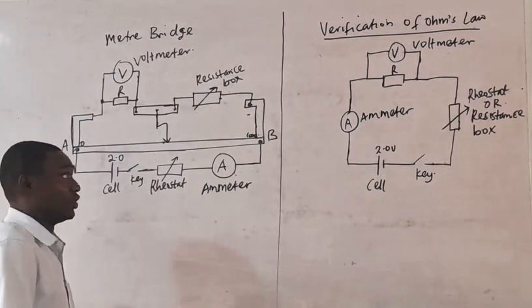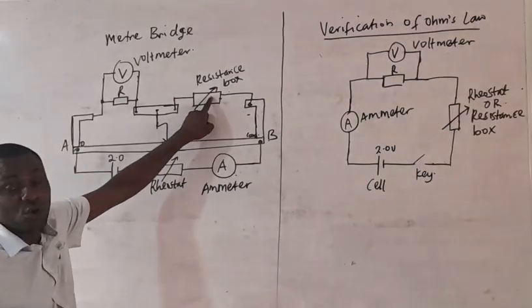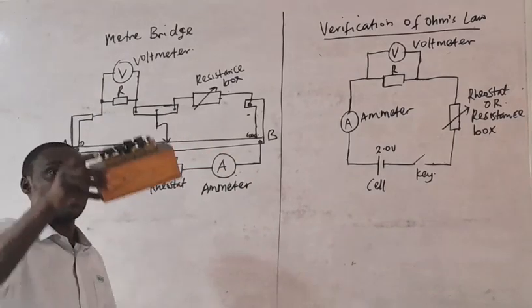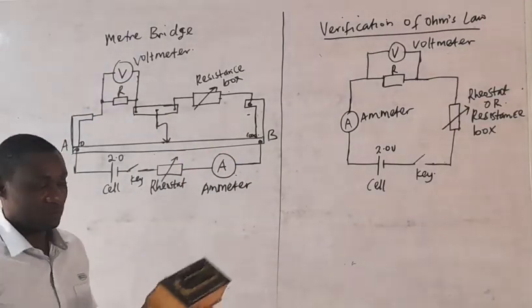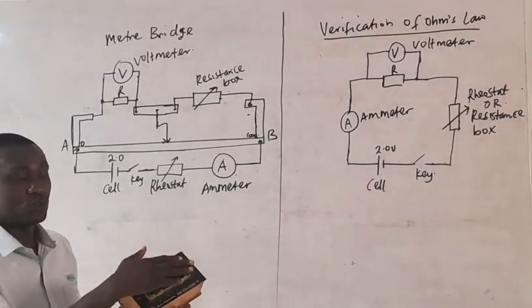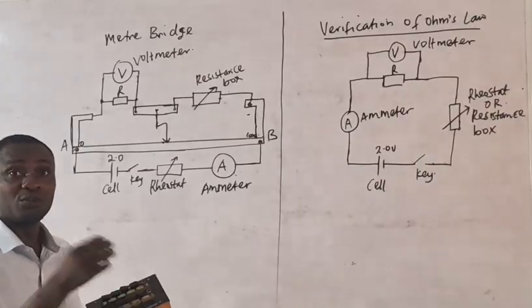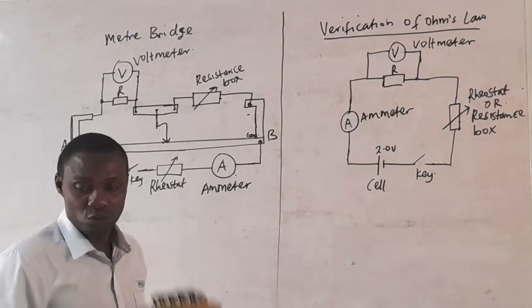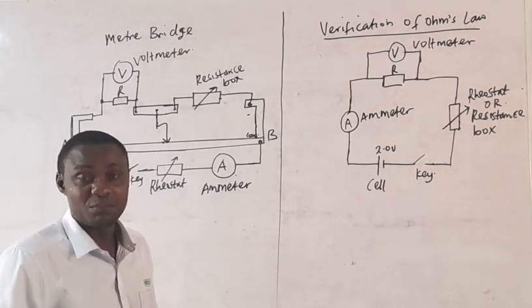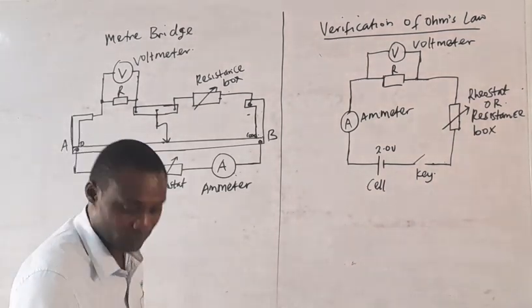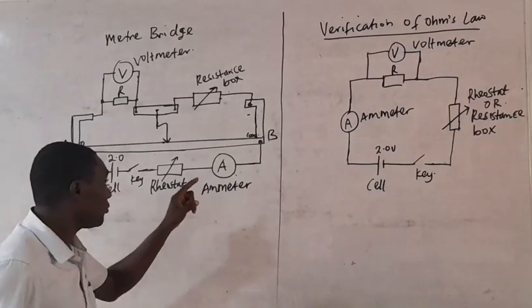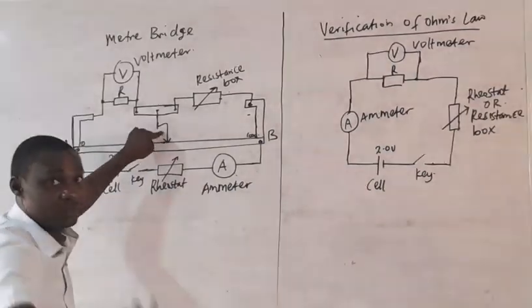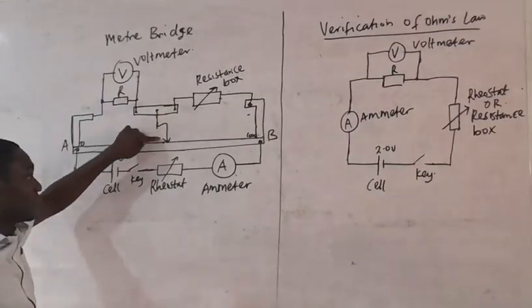The resistant box — they may ask you to change the values of the device. This is a resistant box. You can see the knob here that we can use to remove the plug to measure or determine the resistance. This can also be used in place of a rheostat. Then we have the jockey — you can see the jockey connected to this.